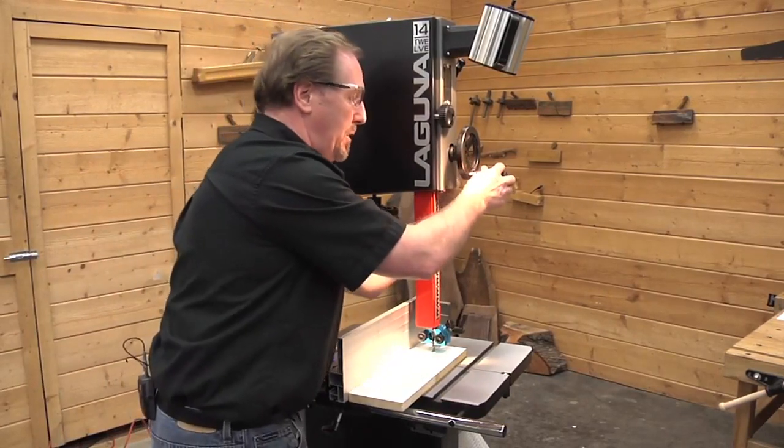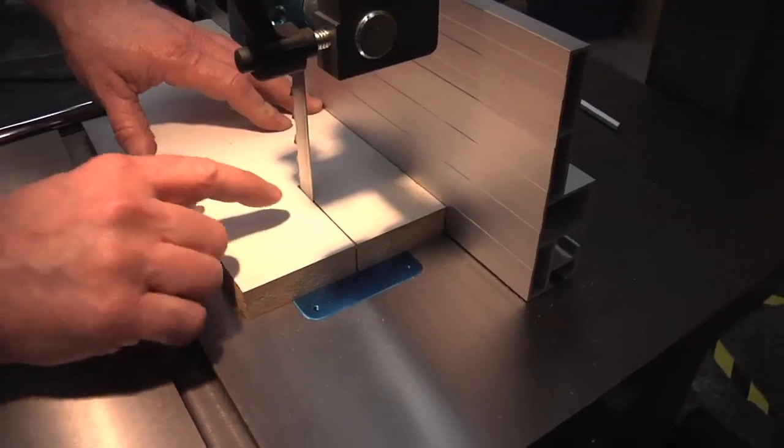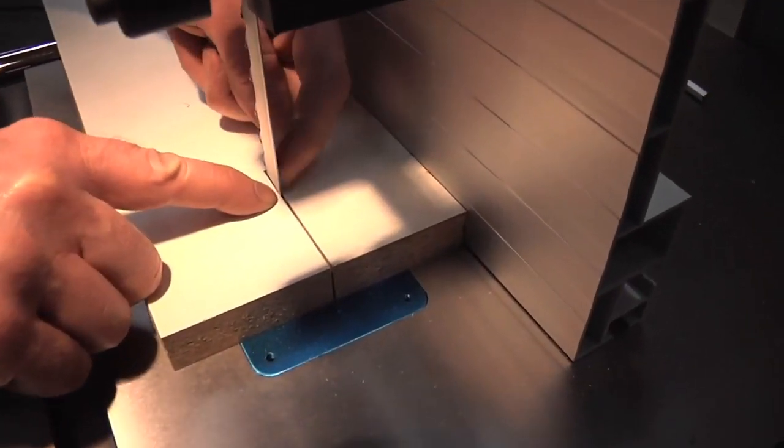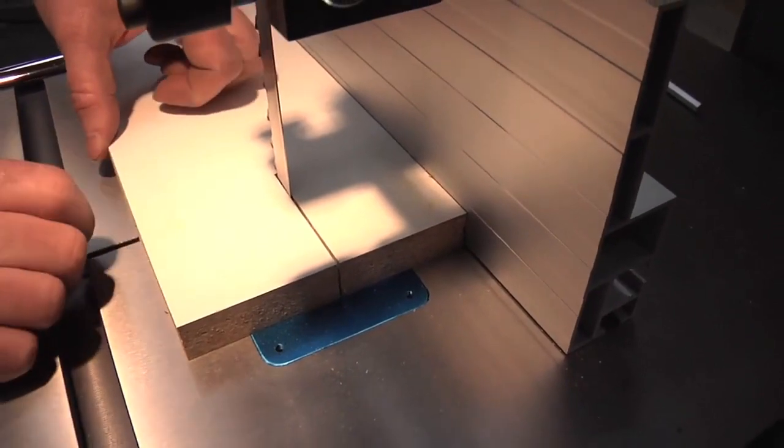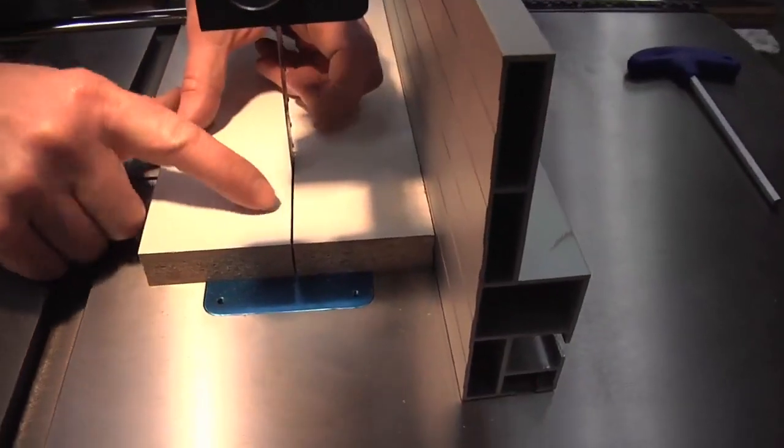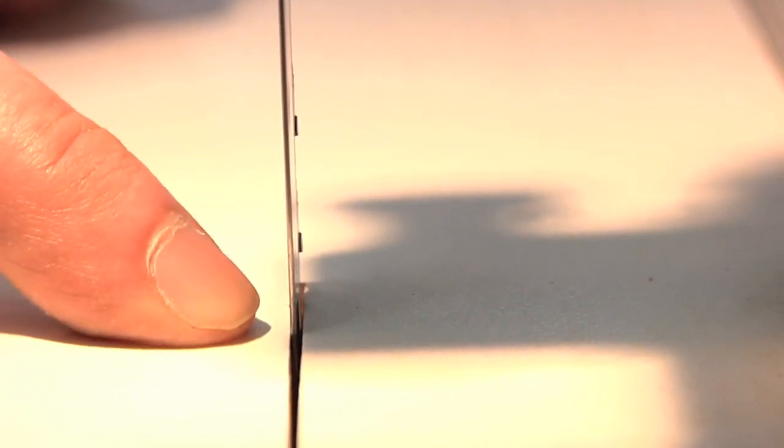I'm going to raise the upper blade guides up so we can have a look. What we're looking for at the back edge of the blade is to see that the gap is the same on the left and right-hand side. The tooth is going to make the kerf; the blade should remain centered in the kerf if the fence is properly adjusted. Now you'll notice that we're a little bit tight on this side and a little bit loose on this side, which indicates to me that the fence needs to be adjusted this way ever so slightly.